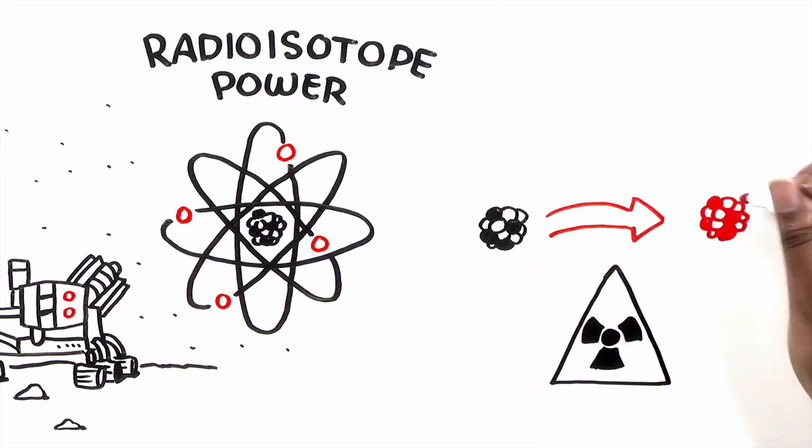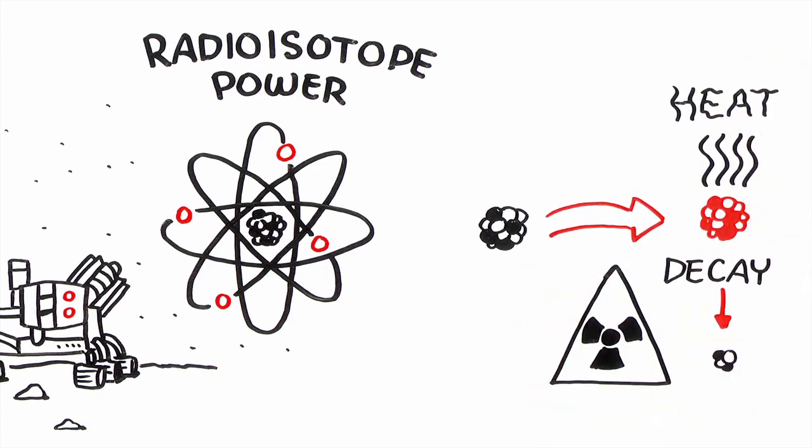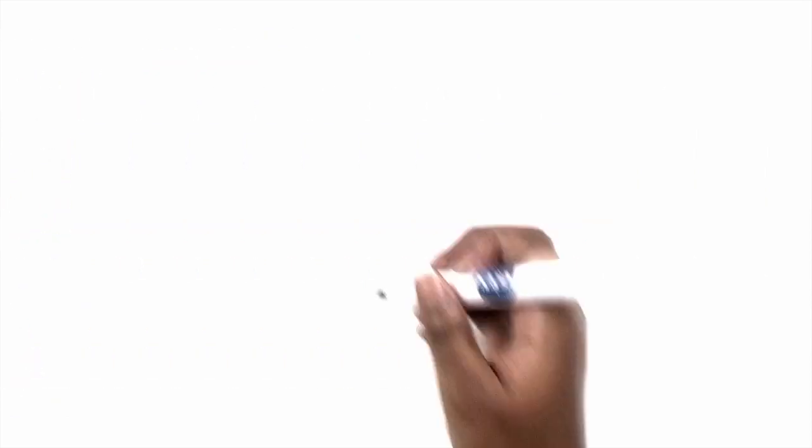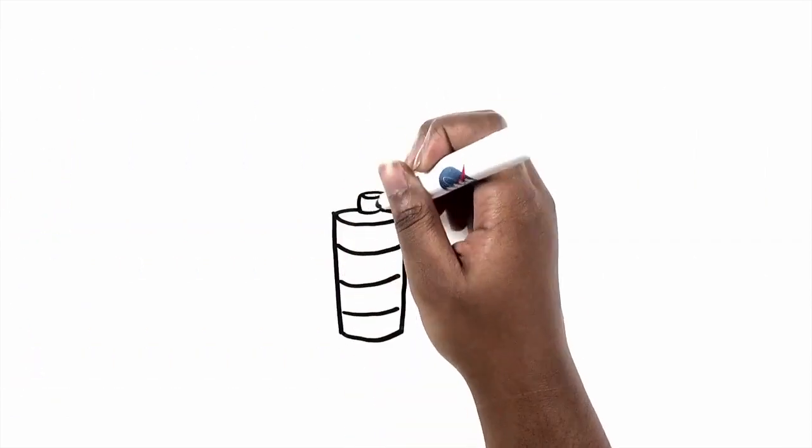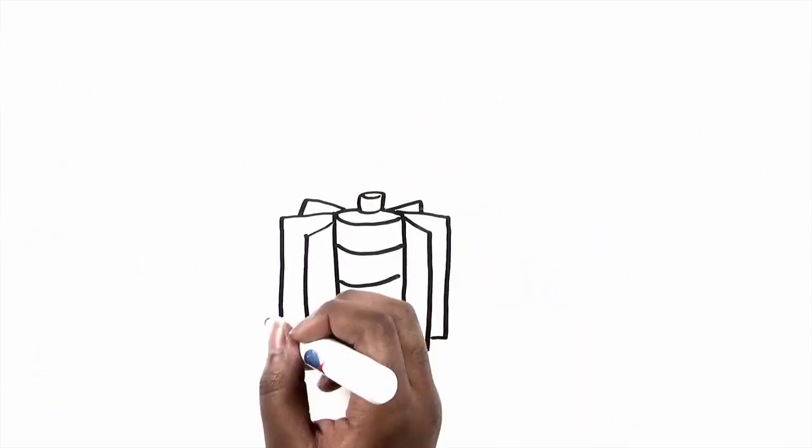A radioactive substance releases heat as it breaks down or decays. A system that converts that heat into electricity is called a radioisotope power system.